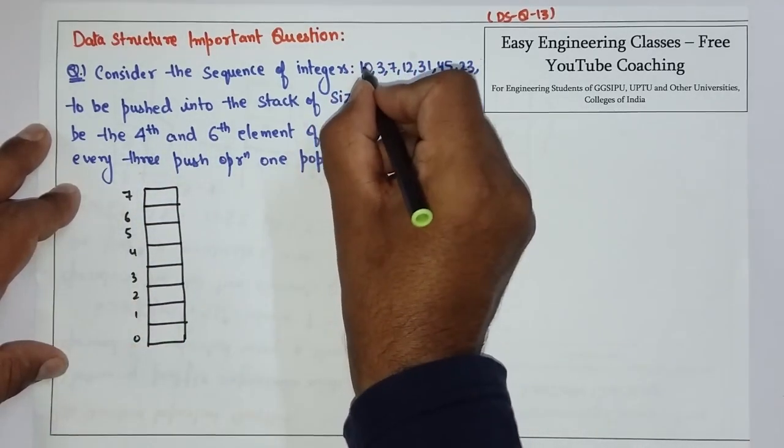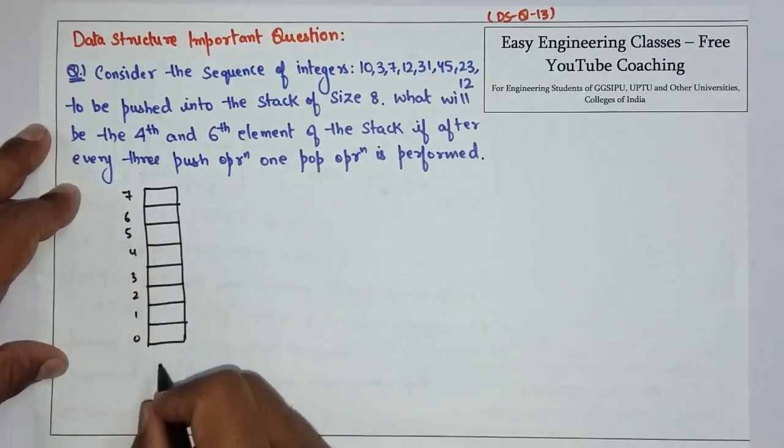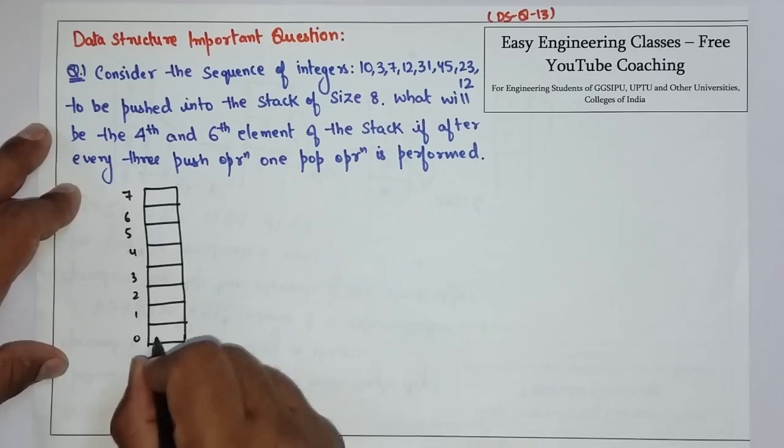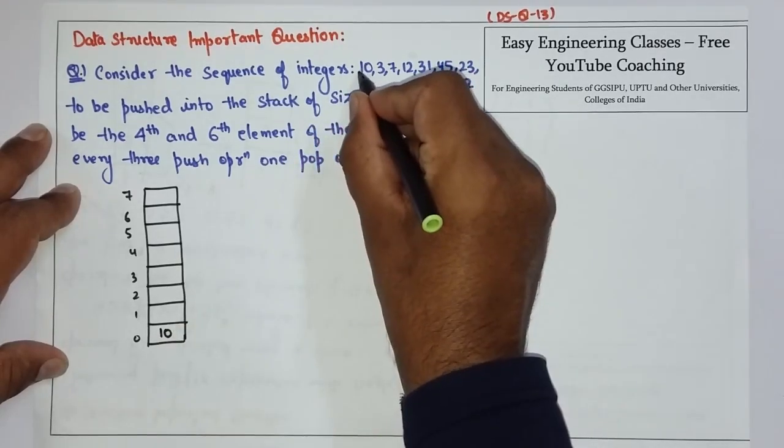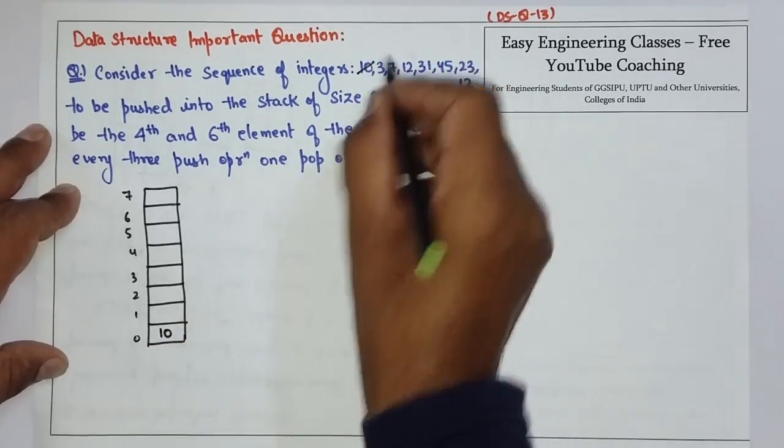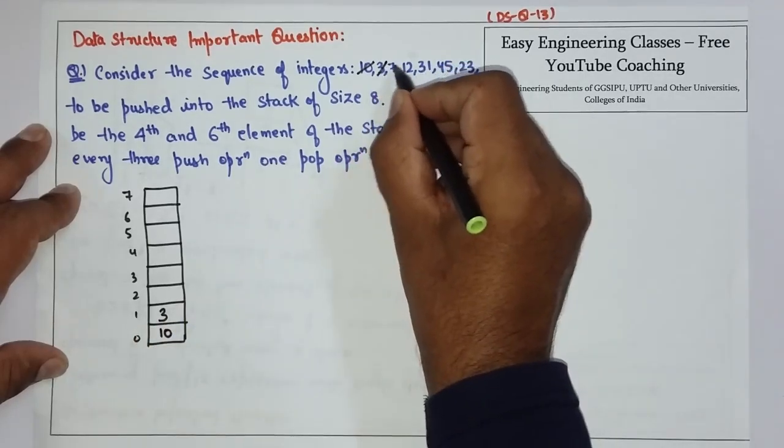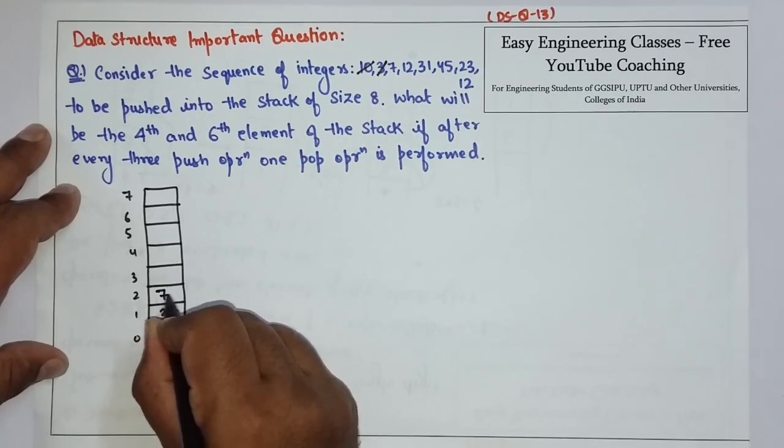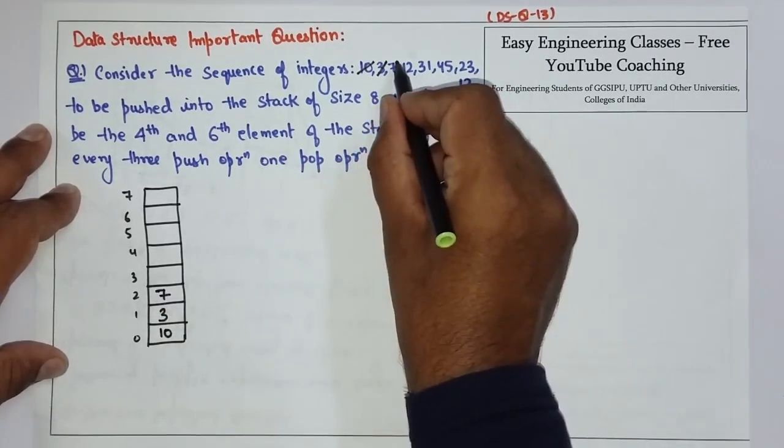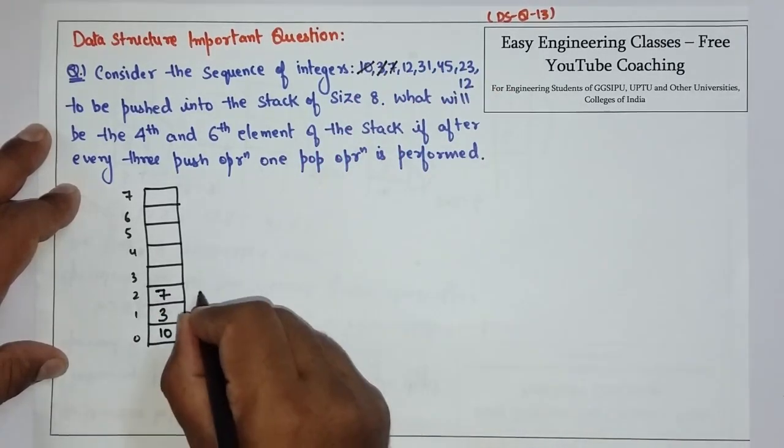So, let's start. The first element is 10. So, we will insert 10 in the stack. So, 1 push operation is done. Then comes 3. So, add 3 here. After that 7. So, we have added 7. Now, 3 push operations are complete.